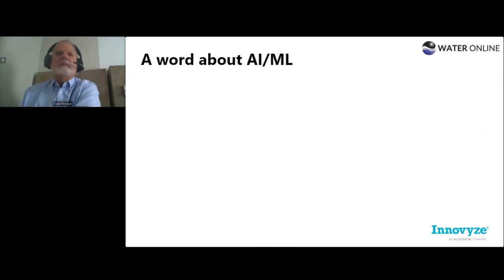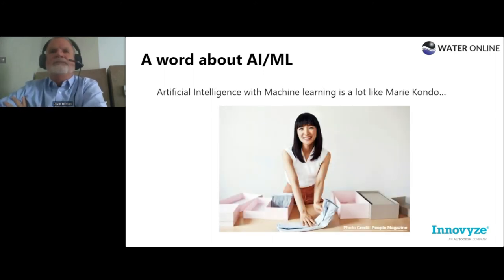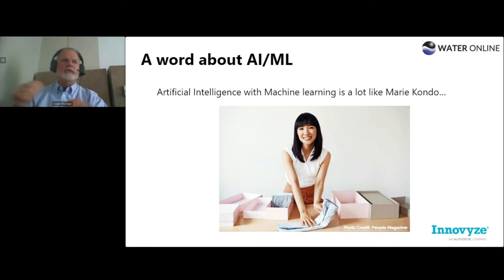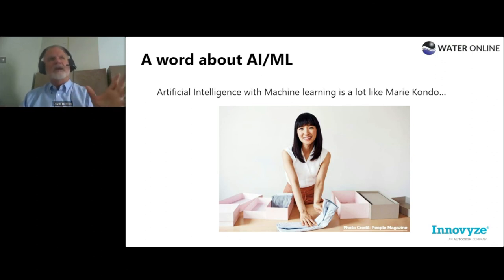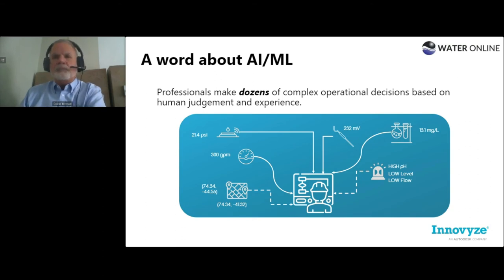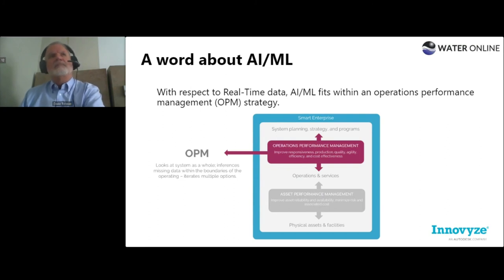A quick word about artificial intelligence and machine learning. As a reference — Marie Kondo is an expert in process flow, fit and function, efficiency, understanding patterns, and optimizing them. As operators, humans make dozens of complex decisions daily based on experience and skills. AI can basically codify those skills to handle the mundane. This sits in our operational performance management portfolio. In plants, AI can be part of your OPM strategy — it's always looking at optimization with definite thresholds in mind, typically tied to your permit. I need to stay in compliance, so I set thresholds.